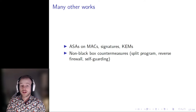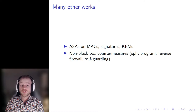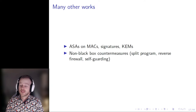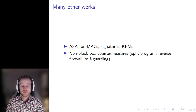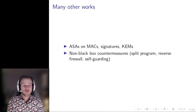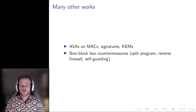While much of our work is comprised of extensions on those two papers, there is a lot of other ongoing research in this area, including ASAs on MACs, signature schemes, and KEMs, as well as countermeasures where different approaches have been taken based on designing non-black-box schemes — including so-called split programs, reverse firewalls, and self-guarding schemes.